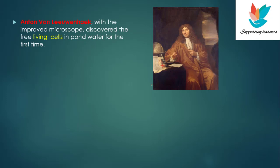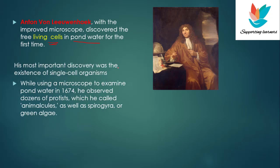He was actually unhappy with the lenses he was using, so he created very high-quality tiny spheres that could magnify objects up to several hundred times. He was a very curious man, and with those lenses he basically observed whatever he could get his hands on. So he observed pond water and he discovered the living cells — whereas what was known to Robert Hooke was dead cells, Anton van Leeuwenhoek actually discovered the living cells in pond water.